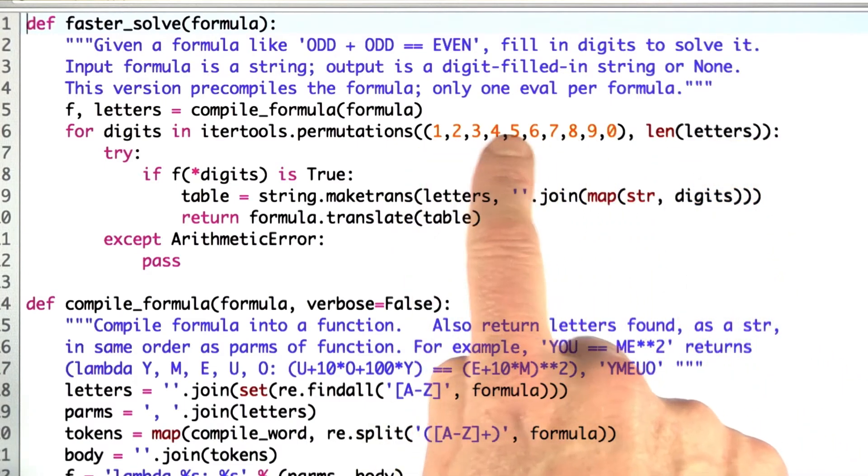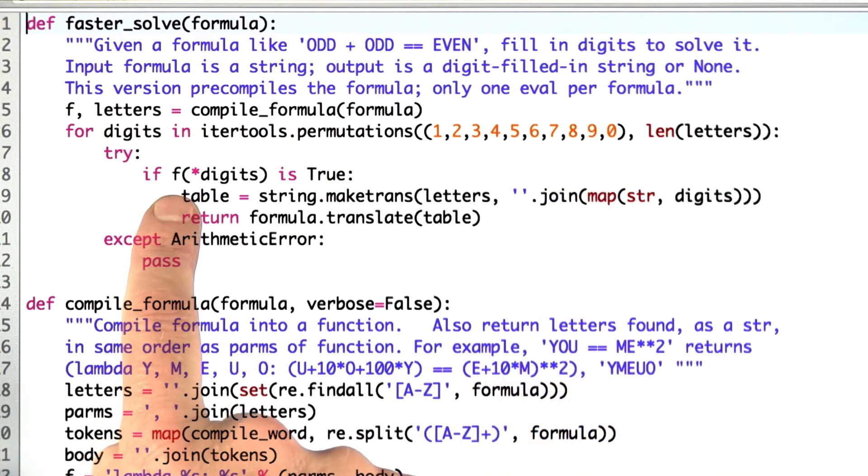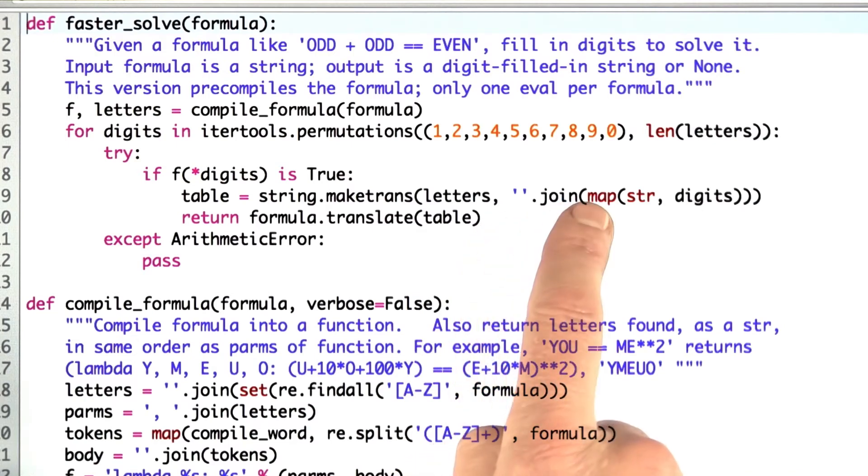Notice that I'm using actual integers here, not strings for the individual digits. If applying the function to the digits is true, then I did the same thing that I did before of making up a translation table and calling the formula.translate to get my final result. But note I only have to do this translation once on the specific permutation that I know works.